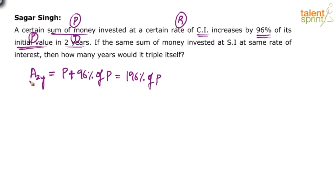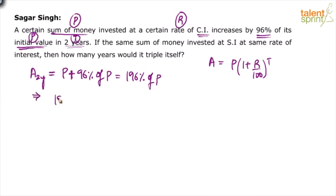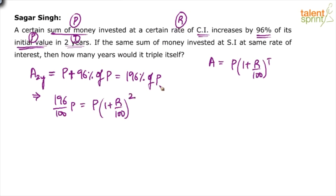We know the formula for amount in compound interest: Amount = P × (1 + R/100)^T. So we can say that 196/100 × P = P × (1 + R/100)^T, where T is two years. P and P get cancelled.